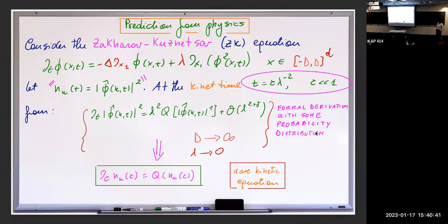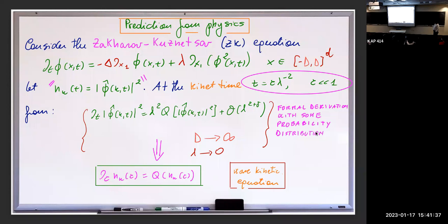The equation I will consider today is the Zakharov-Kuznetsov equation, or ZK equation, which is the same one Nazarenko uses in his book for deriving the wave kinetic equation. It is really a higher-dimensional KdV-type equation. In dimension one you just have a third-order derivative, a time derivative, and down here a quadratic nonlinearity — that's just KdV in one dimension. There is a higher-dimensional version. Lambda is in front of the nonlinearity, which is quadratic, and lambda is going to go to zero. The equation is defined in a box of size D.